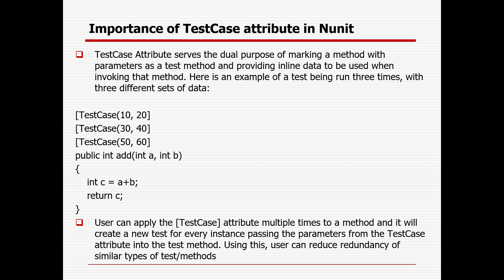Here is an example of a test being run three times with three different sets of data. Suppose you want to create a method called Add, where you add two integers A and B, store the result in C and return it. If you want to run it once, the Test attribute is fine, but if you want to run it five or ten times with varied data, you need to use TestCase.